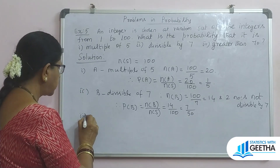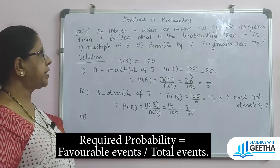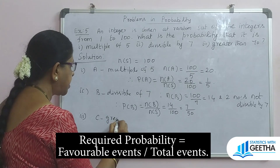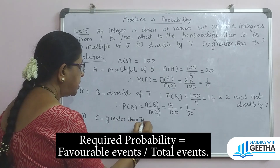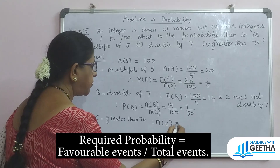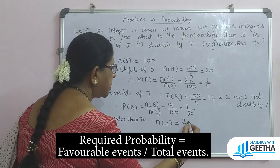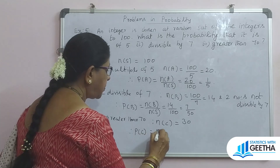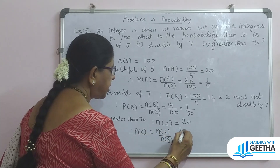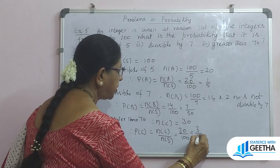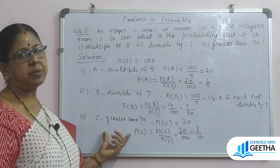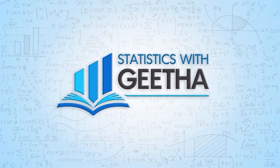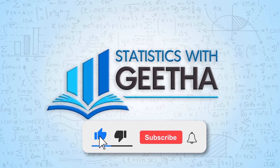For subdivision 3, the integer is greater than 70. The integers from 71 to 100 give 30 numbers, so N of C equals 30. Therefore, the probability of C equals 30 divided by 100, which equals 3 by 10. If you found this video helpful, please comment, share, and subscribe. Thank you.